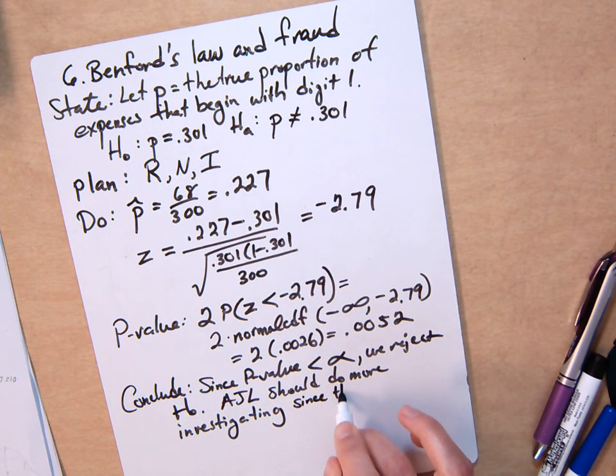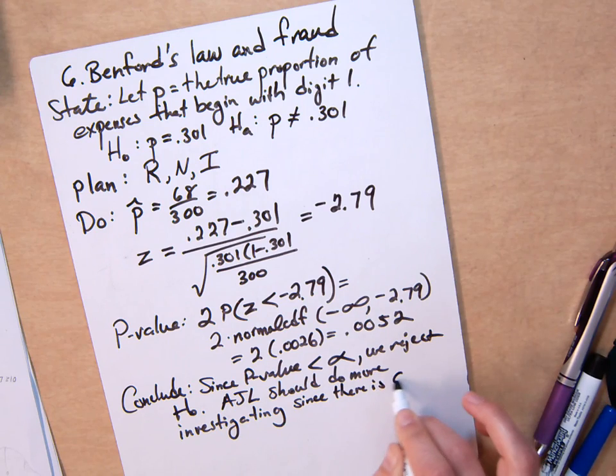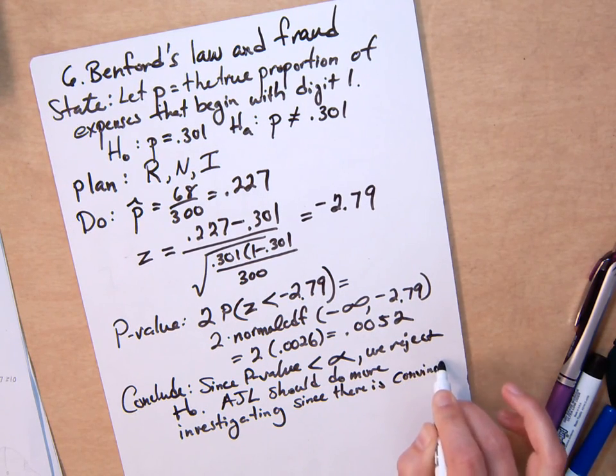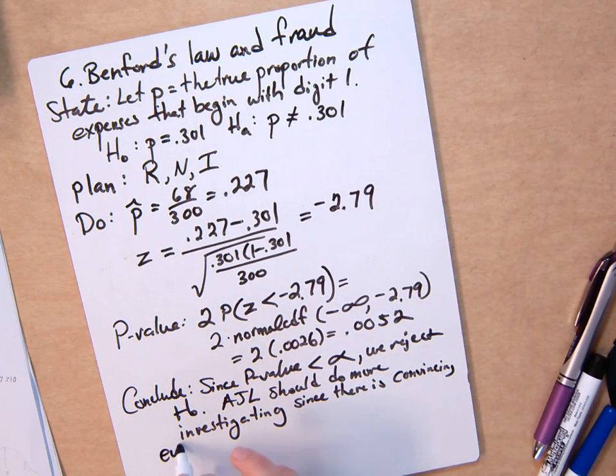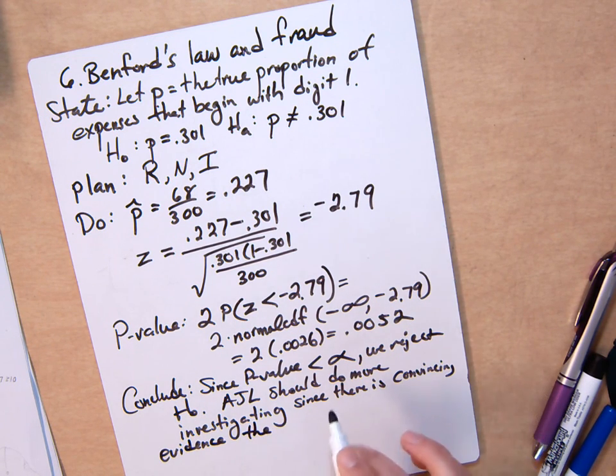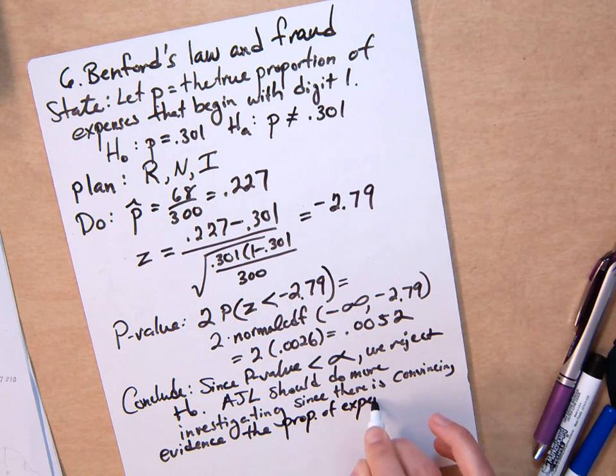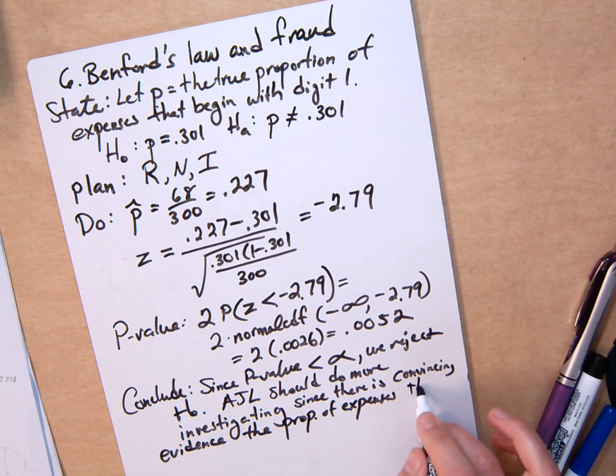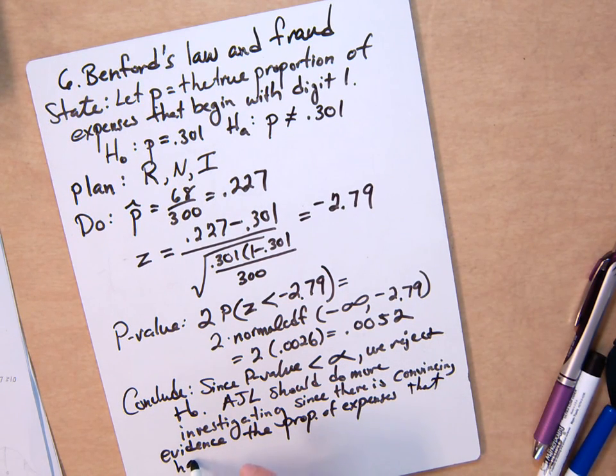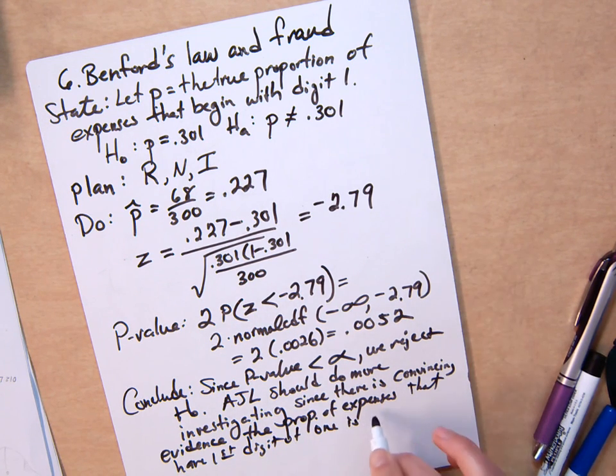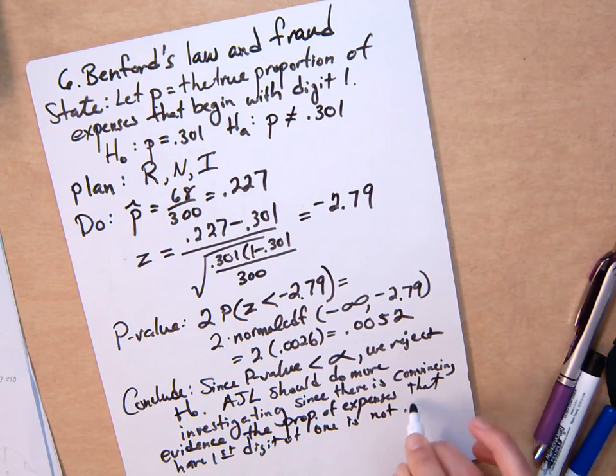Since there is convincing evidence that the proportion of expenses that have a first digit of 1 is not 0.301.